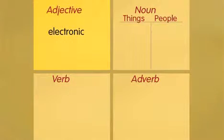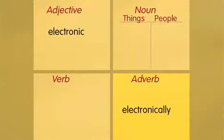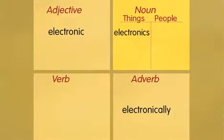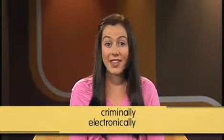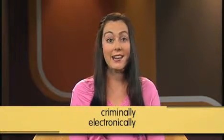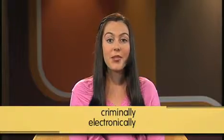Let's look at the table again. We have electronic, the adjective; electronically, the adverb; and electronics, the noun. You'll notice that not all words take all these different forms, but where they do exist, you'll be able to see patterns emerging. For example, look at the adverbs criminally and electronically — they both end in -LY.